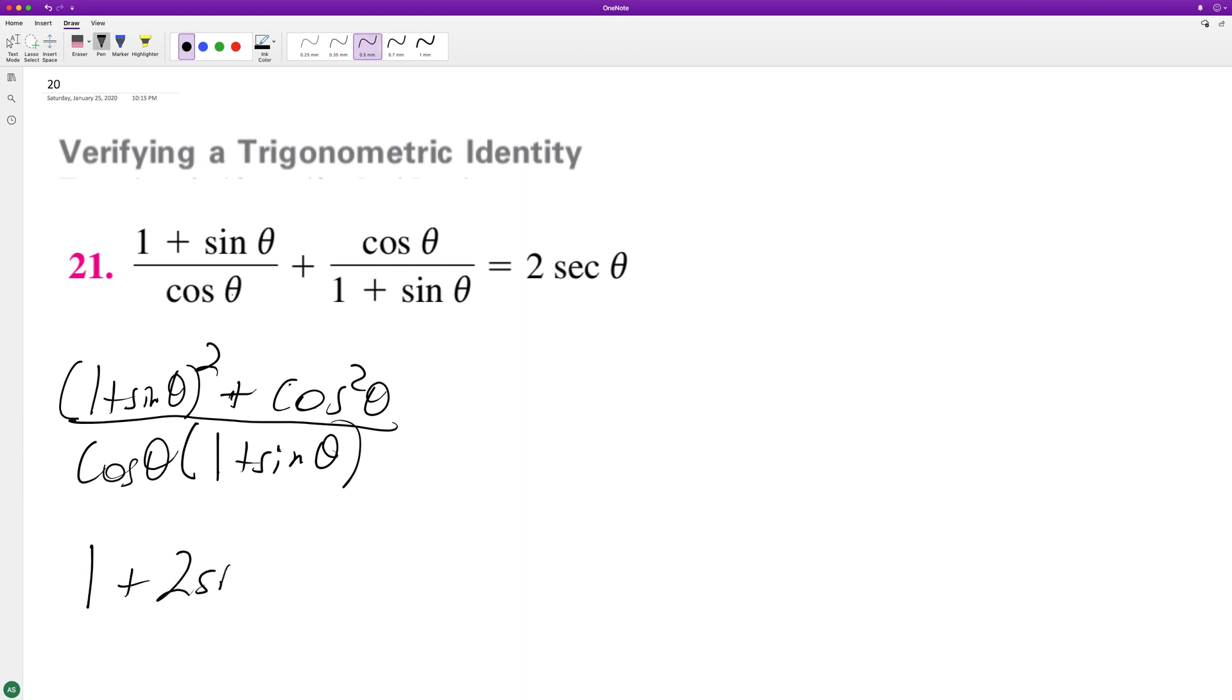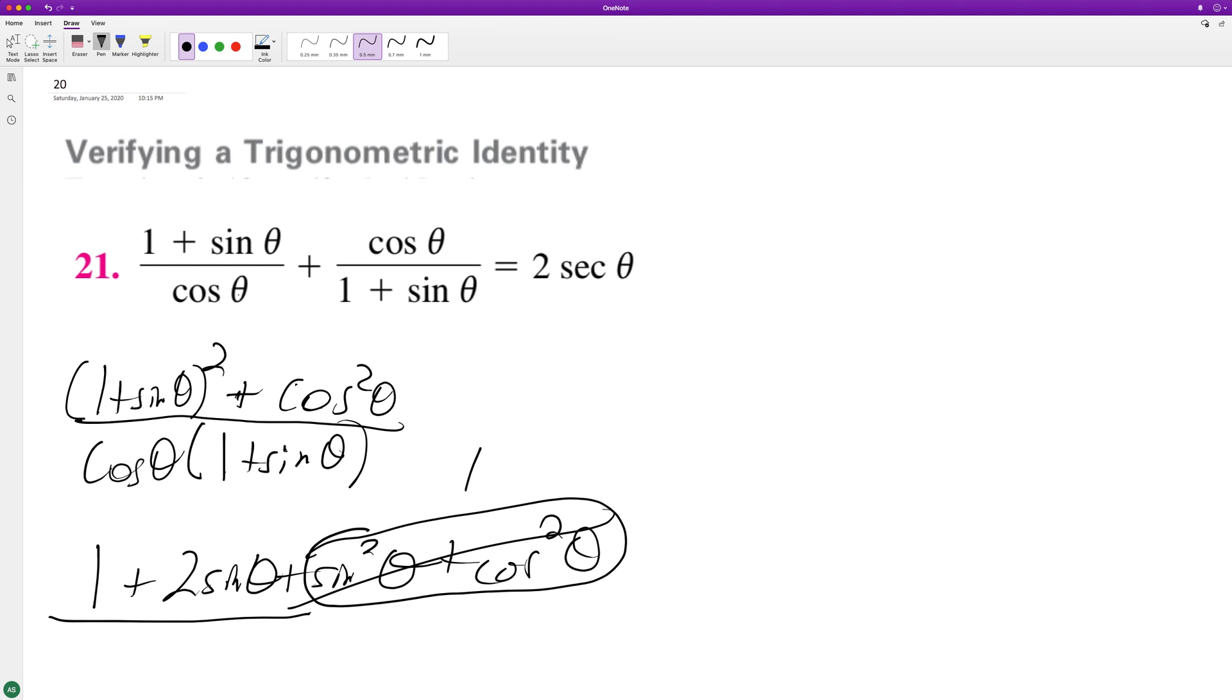We get 1 plus 2 sine theta plus sine squared theta plus cosine squared theta. And I can tell you by looking at this, this just becomes 1. So we have 1 plus 2 sine theta plus 1.